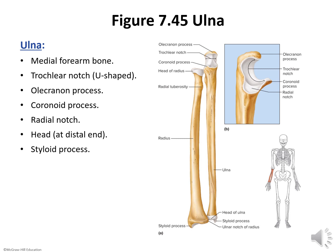The ulna, located on the medial side of the forearm, is longer than the radius and overlaps the end of the humerus posteriorly. At its proximal end, the ulna has a wrench-like opening called the trochlear notch that articulates with the trochlea of the humerus. The olecranon process, located above the trochlear notch, provides an attachment for the triceps brachii muscle that straightens the upper limb at the elbow. During this movement, the olecranon process of the ulna fits into the olecranon fossa of the humerus.